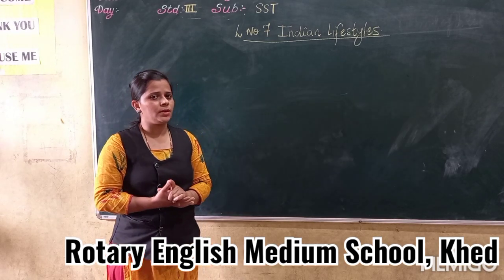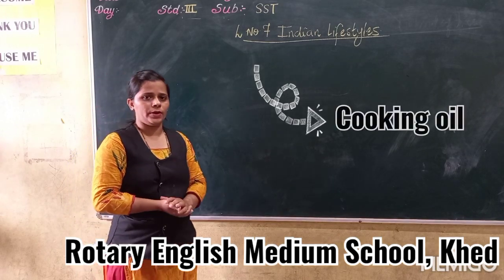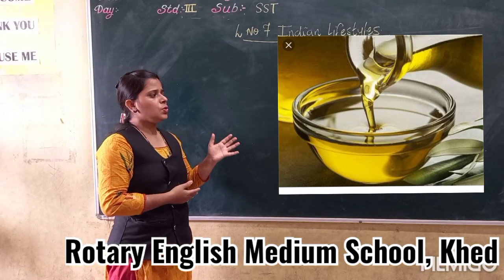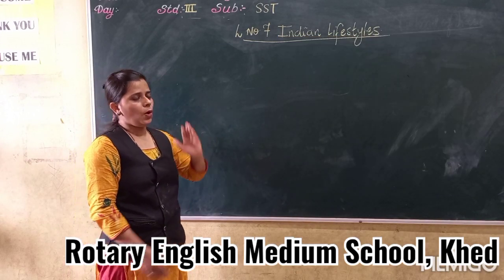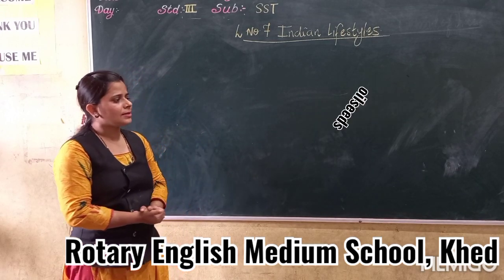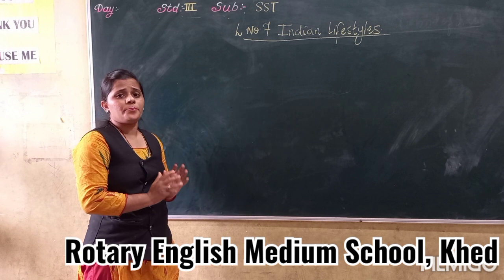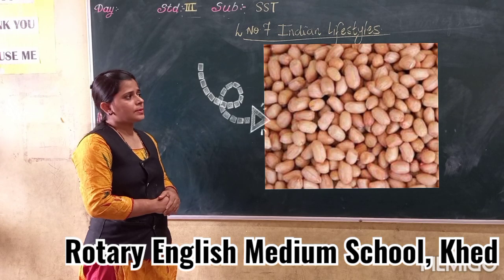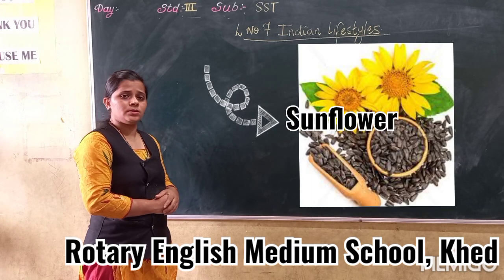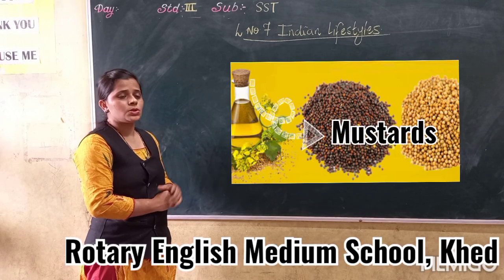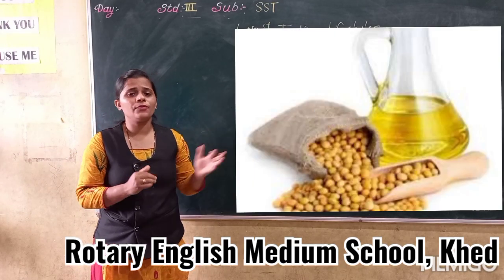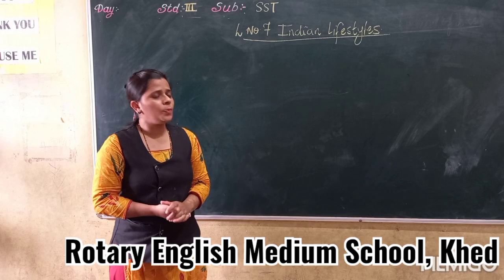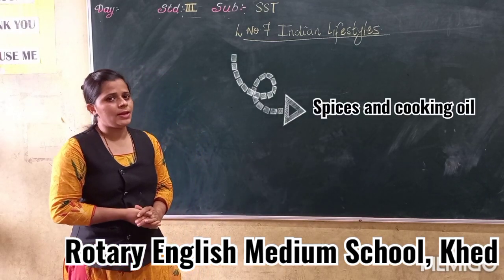Now let's move to the next topic — cooking oil. The oil we use for cooking comes from oil seeds. India produces oil seeds like groundnut, sunflower, mustard, coconut, soya bean, etc. This different oil gives food a different taste. I hope you have understood about the spices and oil seeds.